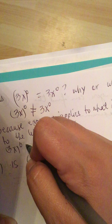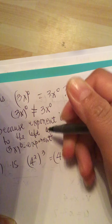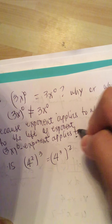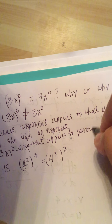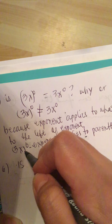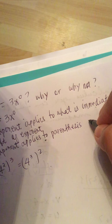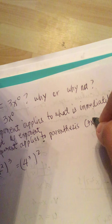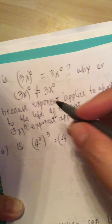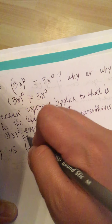In (3x)^0, the exponent applies to the parentheses, so the entire expression (3x) is raised to the 0 power. This equals 1, so (3x)^0 is equal to 1.